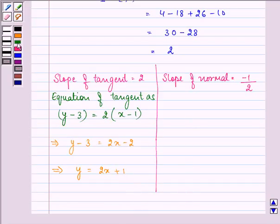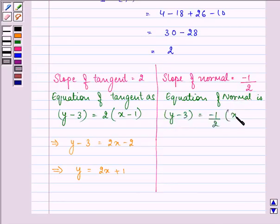Now in the same manner, we will be finding out equation of normal is y minus y1 equal to slope of the normal, x minus x1, which gives us 2y minus 6 is equal to x plus 1, which further gives us the value as x plus 2y minus 6.